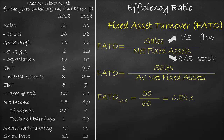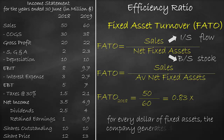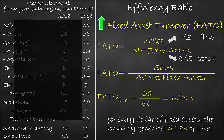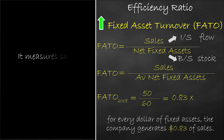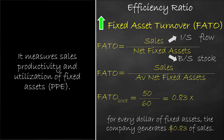The unit of the fixed asset turnover ratio is times. It means that every dollar of fixed assets, the company generates $0.83 of sales. The higher the fixed asset turnover ratio, the better. It measures sales productivity and utilization of fixed assets, or property, plant, and equipment.